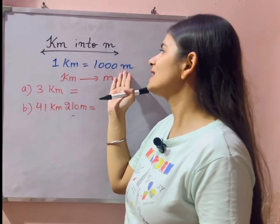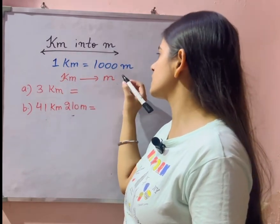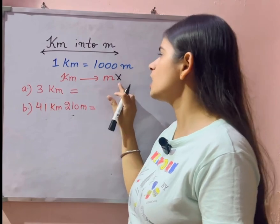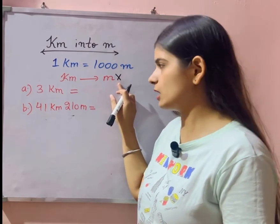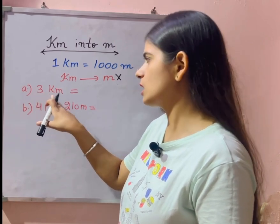hai. One kilometer me hamesha hamare thousand meter hote hain. So kilometer se meter me jane ke liye hame kya karna padta hai, hamesha multiply karna padta hai. So here one question is given to you: three kilometer, yani three